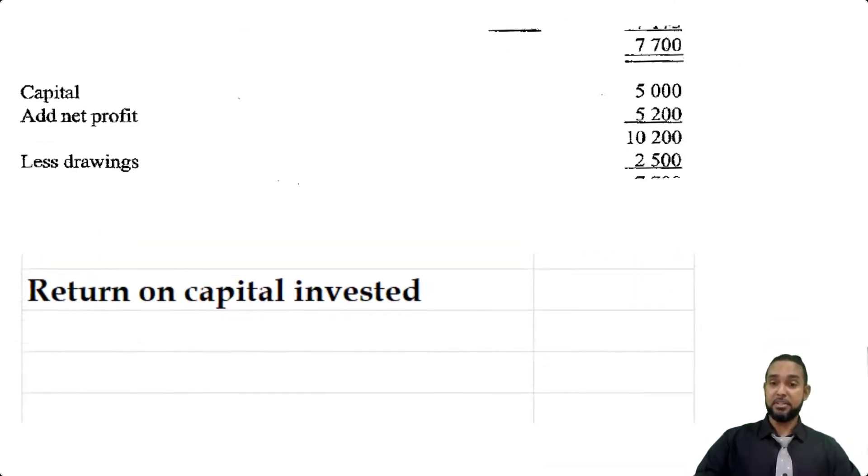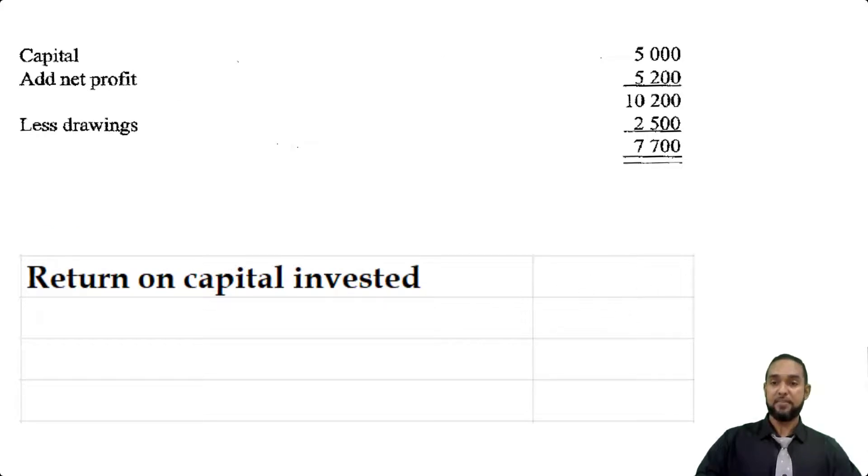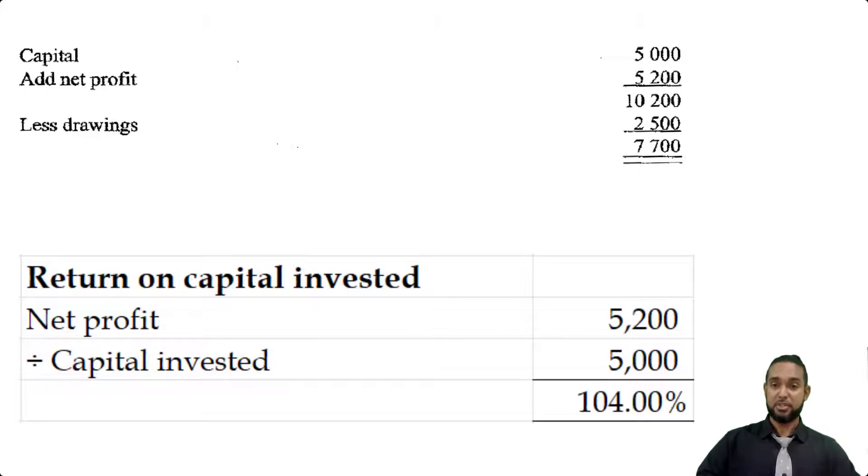Another measure of profitability they want here is the return on capital invested. That's simply the net profit expressed as a percentage of the capital invested. The capital invested is simply the capital of the owner. The owner invests capital to start the business. The net profit was 5,200. Now capital was given to us in the balance sheet as 5,000. So I used the opening capital of 5,000 and expressed the net profit as a percentage of that, and we got 104%.